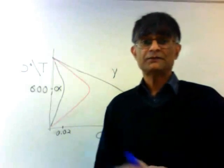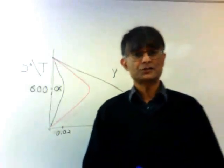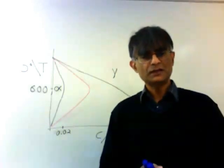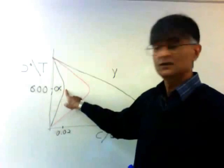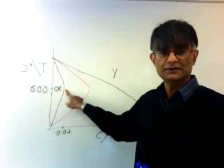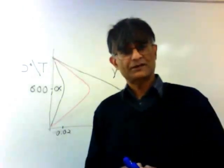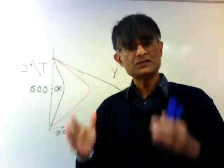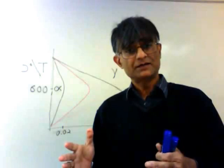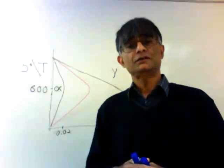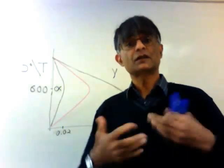That bainitic ferrite has a carbon concentration in it which is well in excess of the value given by the ordinary iron-carbon phase diagram. And what is even more surprising is that the carbon remains within the bainitic ferrite, even though it is in contact with austenite, where the carbon would rather be.